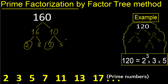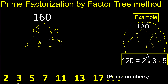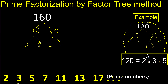2. 5 is a prime number, so we finish that branch. For 8: 4 multiplied by 2. And 4 is 2 multiplied by 2. All branches now end in prime numbers.